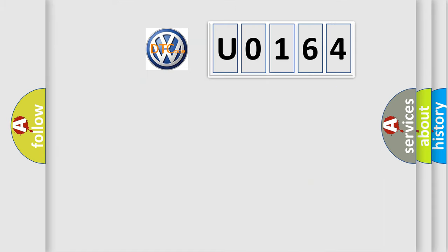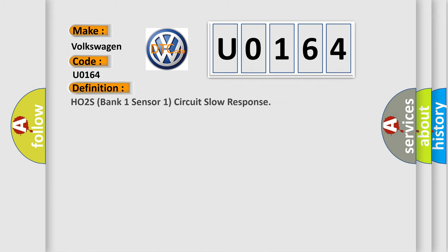The number itself does not make sense to us if we cannot assign information about what it actually expresses. So, what does the diagnostic trouble code U0164 interpret specifically for Volkswagen car manufacturers? The basic definition is HO2S bank one sensor one circuit slow response.